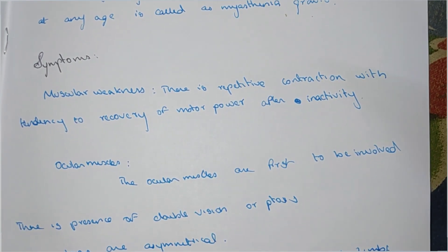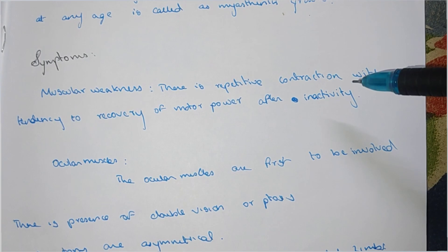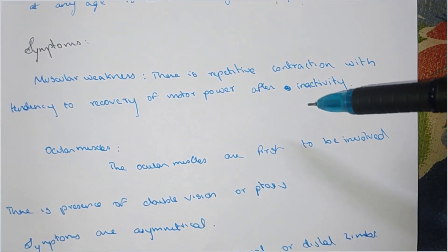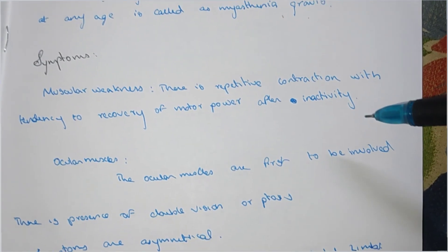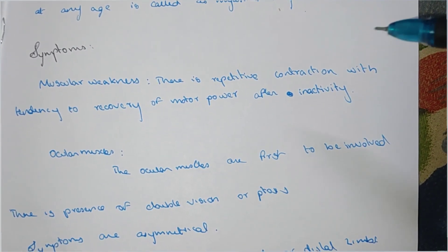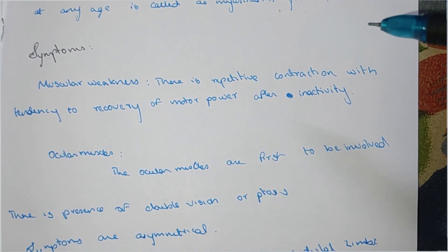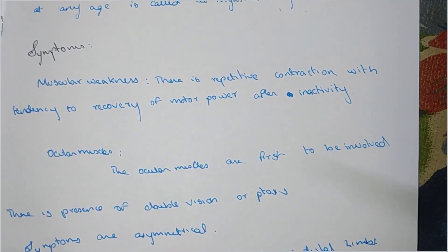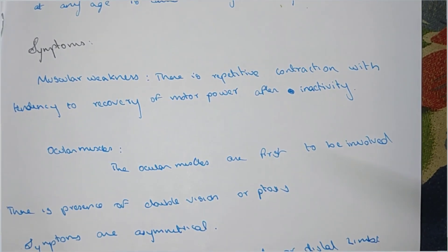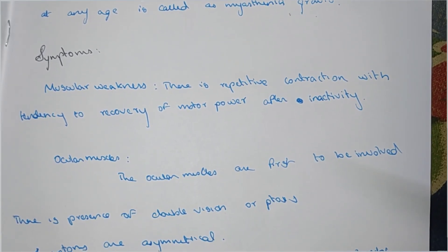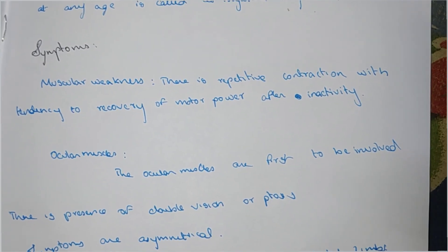Symptoms: Muscular weakness is characterized by repetitive contraction with tendency to recovery of motor power after inactivity. There is repeated contraction with muscle weakness.